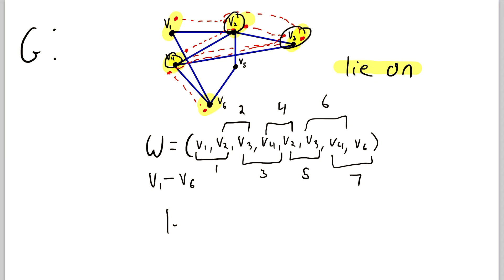So we can say that W has a length of 7. The length of a walk is the number of edges, distinct or otherwise, traversed in the walk.